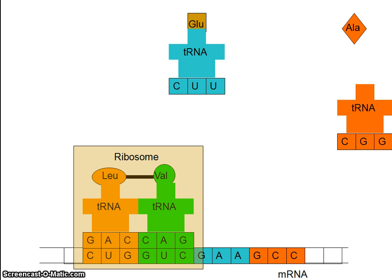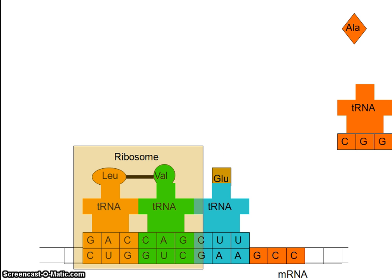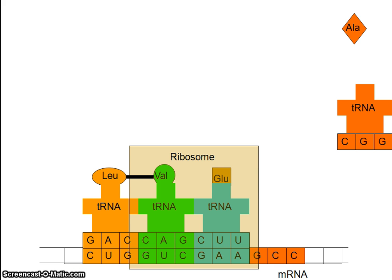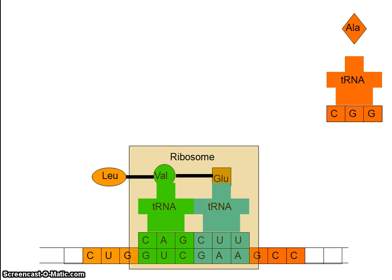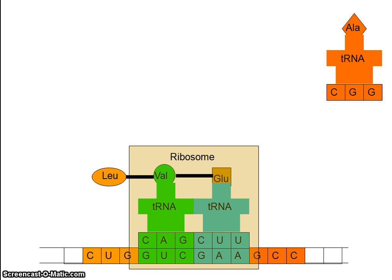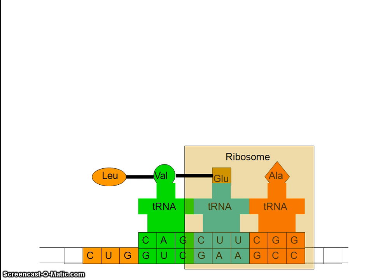The next amino acid is picked up again where the base groups are complementary. The ribosome links those amino acids together and you can see the beginnings of a protein chain. Once delivered, the transfer RNA molecules can move away. The next tRNA molecule picks up alanine, the base groups are complementary, and the ribosome links them together. The amino acids are linked in the correct order as a result of these codes.